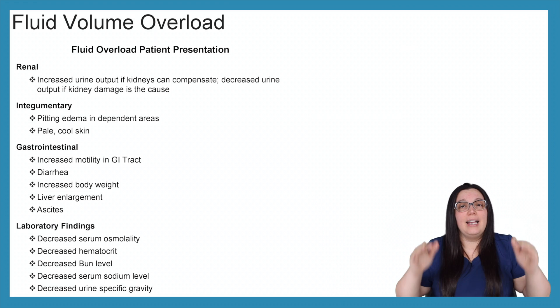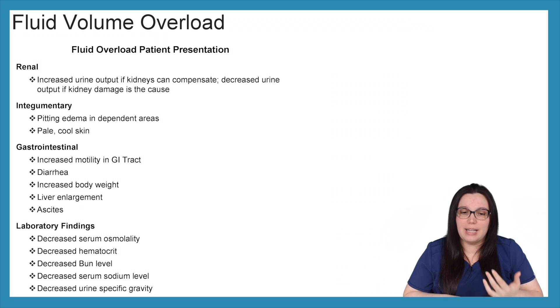And lastly, when it comes to our laboratory findings, as you know, too much water in our blood vessels are going to cause dilution. So you're going to have a decrease in serum osmolality, a decrease in your hematocrit, BUN level, serum sodium levels, as well as a decrease in urine-specific gravity.